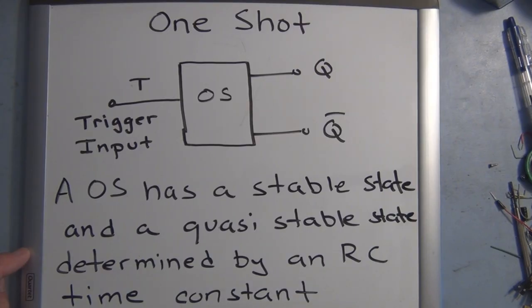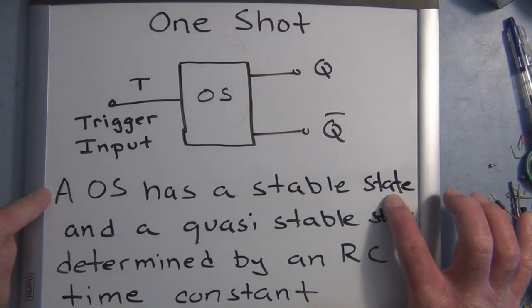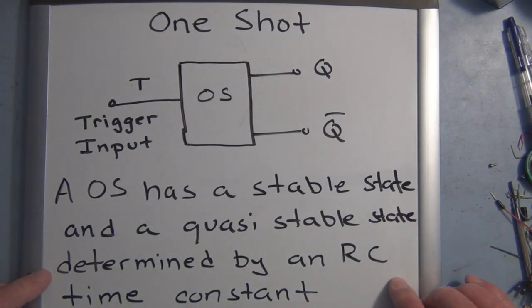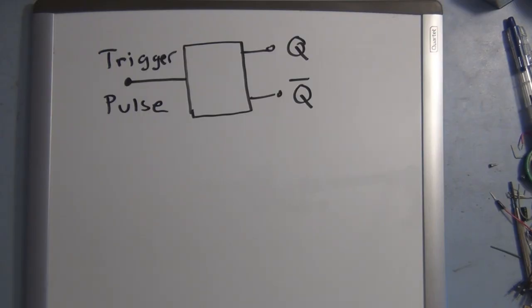Determined by an RC time constant, and then it will switch back to the stable default state until it's triggered again. So a one shot has a stable state and a quasi stable state determined by an RC time constant.